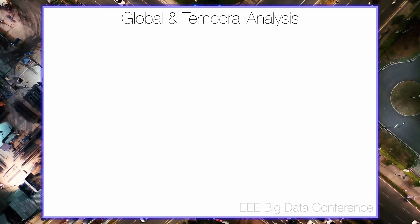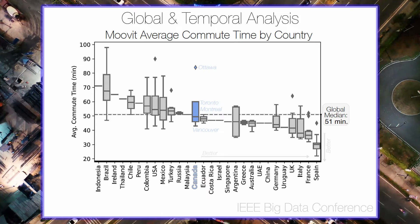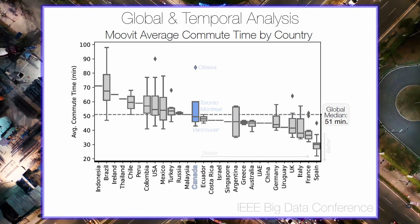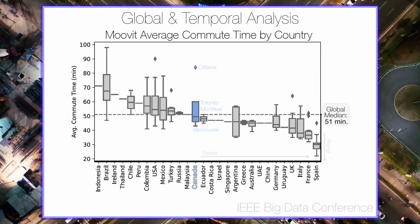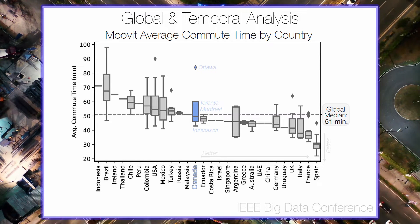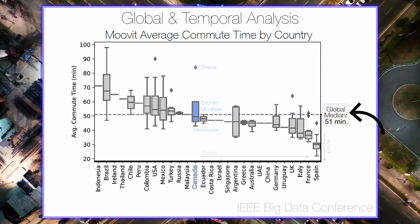Our final analysis sought to broaden the scope of our work both in a global context and in a more temporal domain by globally situating average Canadian commute times amongst other cities and countries. To broaden our analysis, we extracted average commute times from 147 cities in 28 different countries from the MOVIT Public Transit Index. By grouping cities into their respective countries and plotting each distribution in decreasing order by median commute time, we generate a comparison of average commute times between each country's cities in relation to the global median.